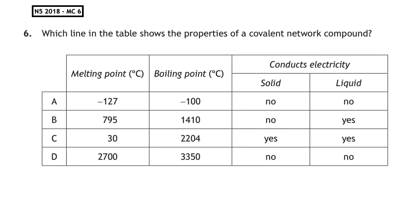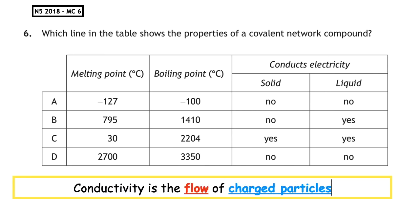This past paper question is from the National 5 2018 multiple choice. Question 6: Which line in the table shows the properties of a covalent network compound? The first thing we want to do is read the table backwards. Covalent substances never conduct electricity - that's because conductivity is the flow of charged particles, and in a covalent bond the charged particles are the electrons.